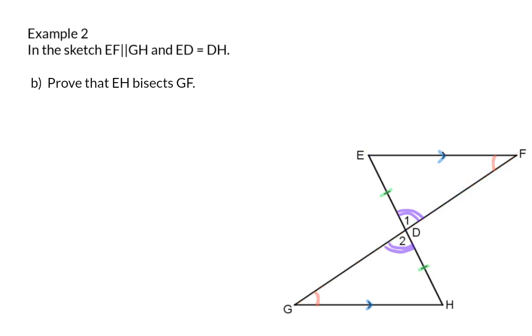In A, we've just proven that these two triangles are congruent. Congruency means that all the corresponding sides and angles are the same. Therefore, we can say that side GD of triangle GDH is the same length as side DF of triangle DEF.